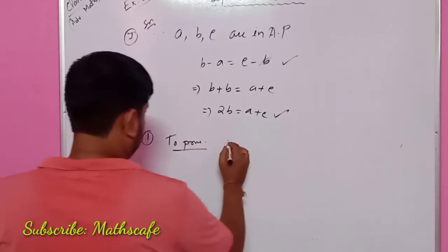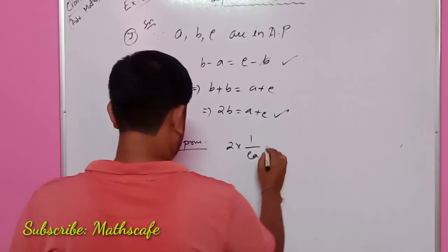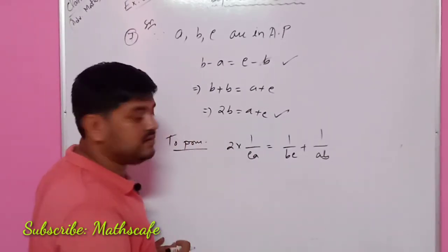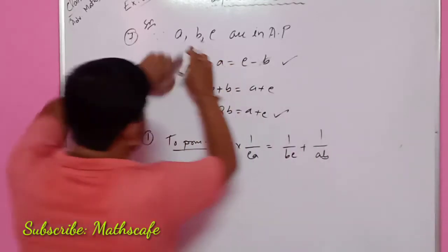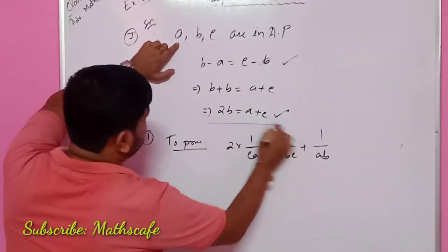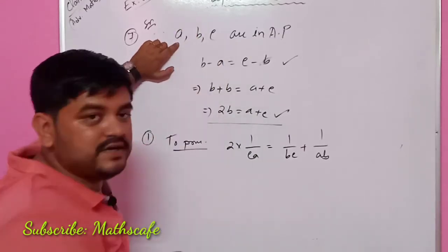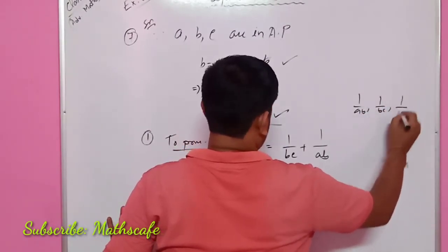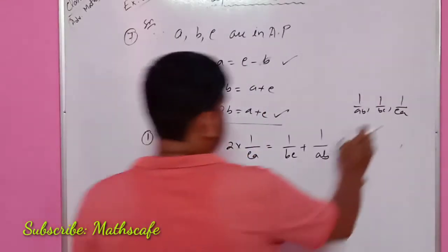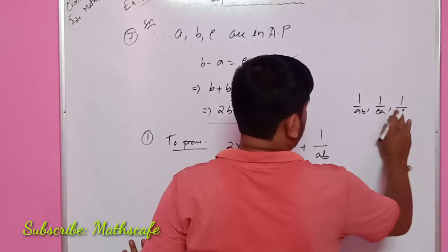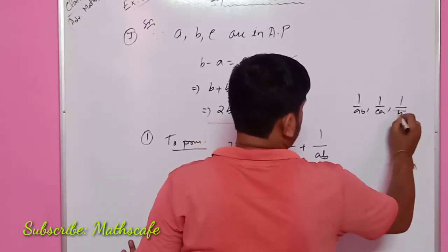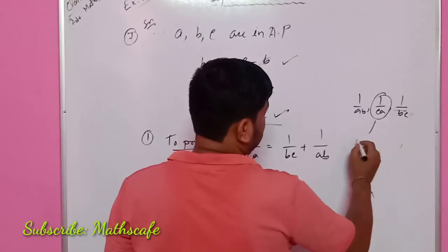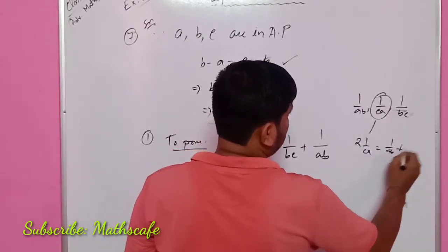So we can prove that 2 into 1 by CA equals 1 by AB plus 1 by BC. I am proving this. So if we have proofing this, then we have 1 by AB, 1 by CA, and 1 by BC are in AP. So the right-hand side: 1 by BC plus 1 by AB. LCM means ABC. So BC means A, AB means C. So A plus C by ABC.